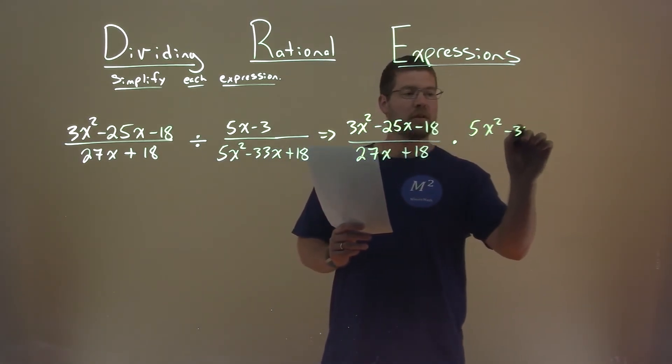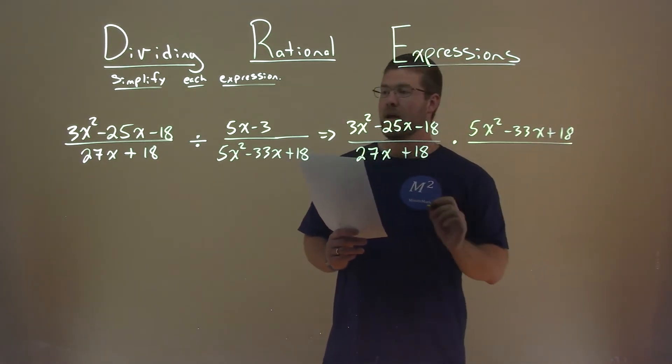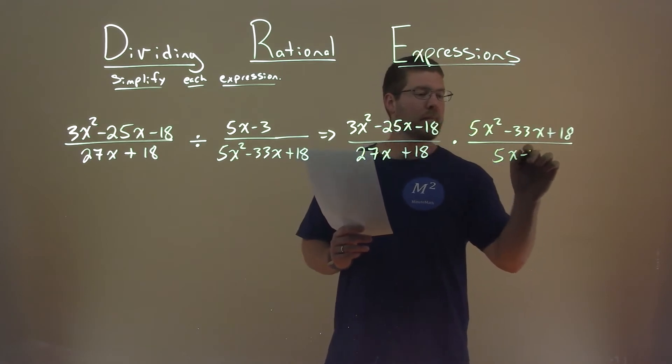5x squared minus 33x plus 18 now goes in the numerator, and the denominator is just 5x minus 3.